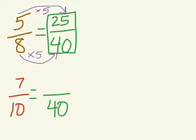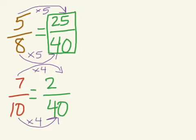Let's work with Rhett's fraction now. To get from ten to forty, multiplied by four. And whatever you do to the denominator, you have to do to the numerator. So we will also multiply by four and seven times four is twenty-eight.